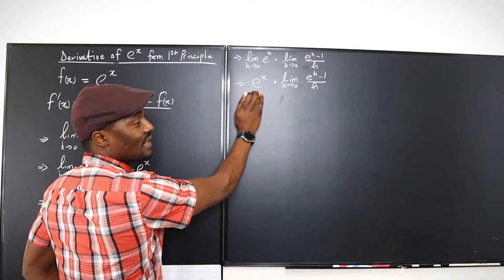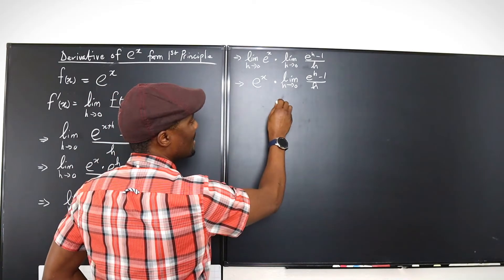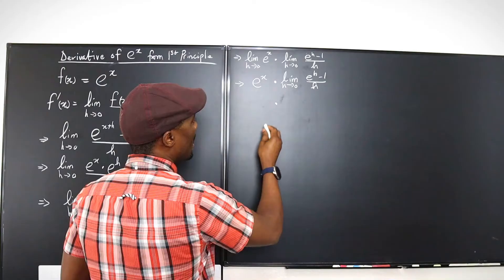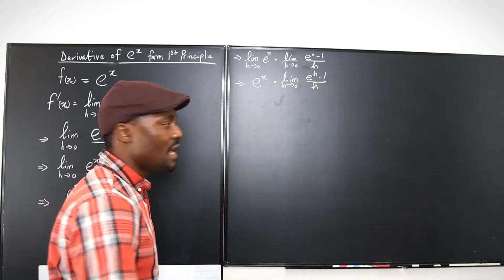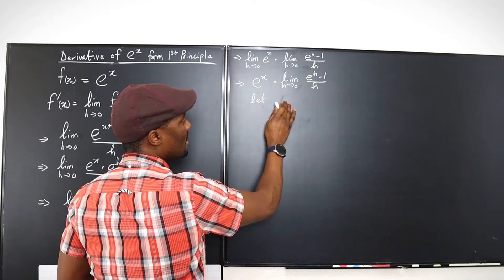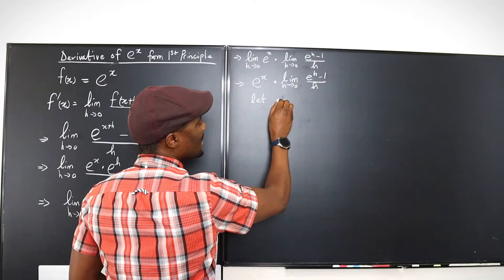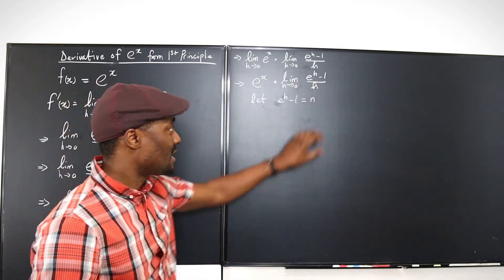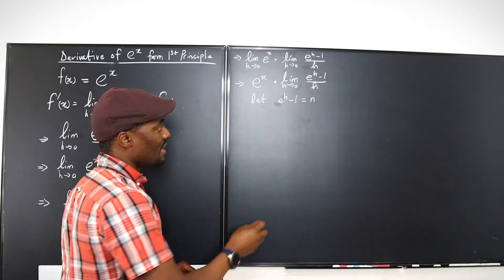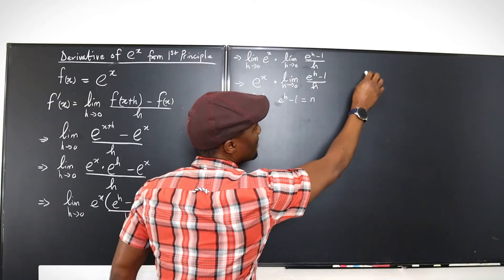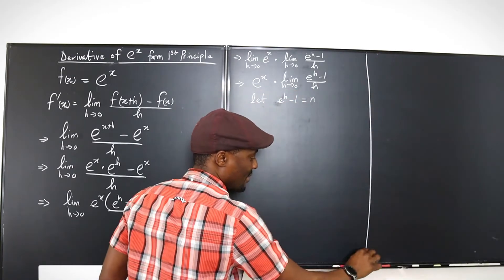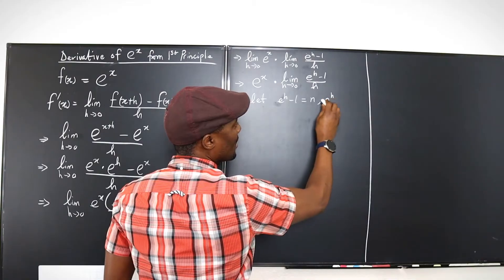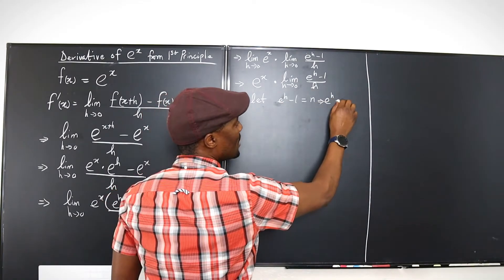I'm just going to keep this and do my work as we continue. Before we go on, I want to do a transformation. Let e to the h minus 1 be equal to n. So I'm going to transform this expression. If I make that substitution, then I can easily say — dividing the space here — this implies that e to the h will now be equal to 1 plus n. I just moved the 1 to this side, so it becomes 1 plus n.